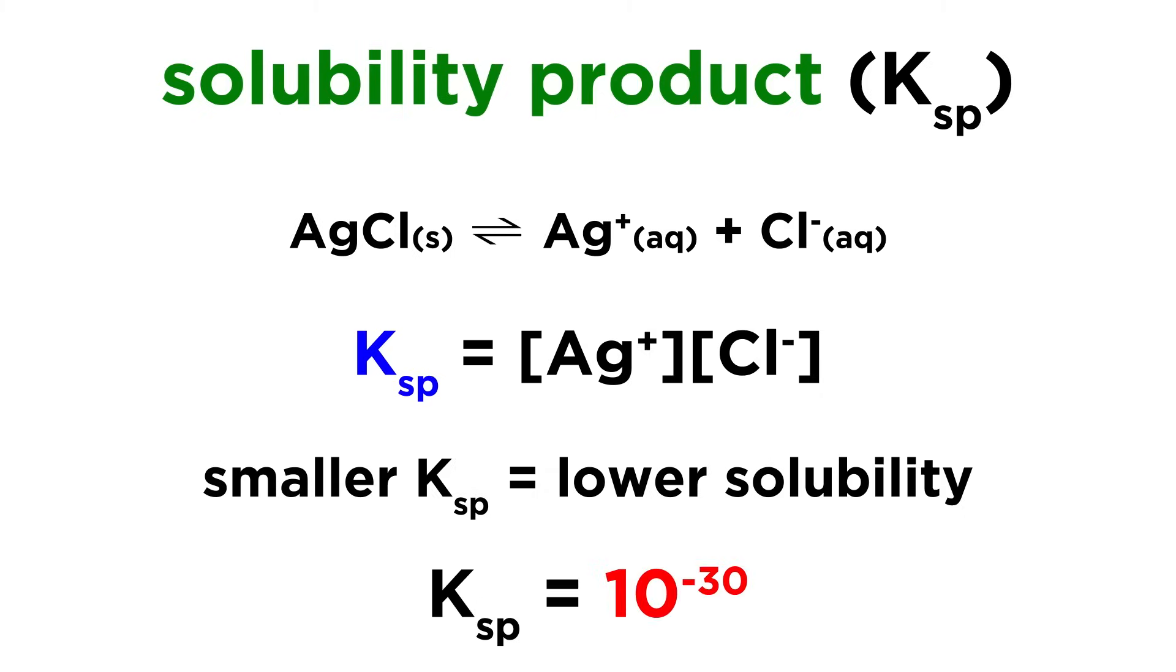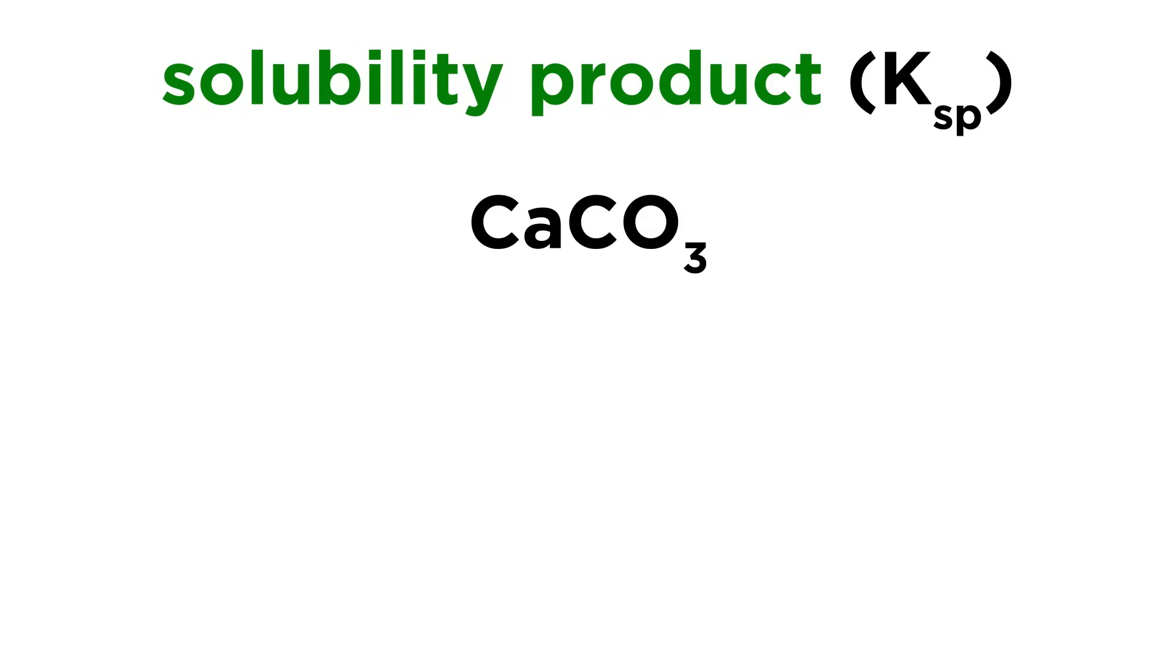And compounds that are extremely water insoluble will have Ksp values on the order of 10 to the negative 30, negative 50, or even smaller. Let's make sure we can write these solubility products for various equilibria.